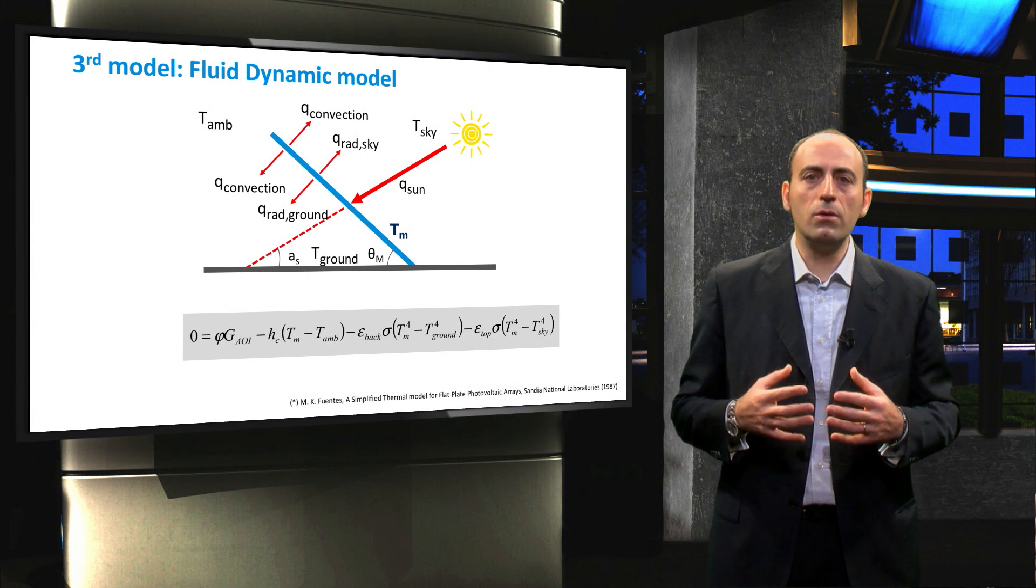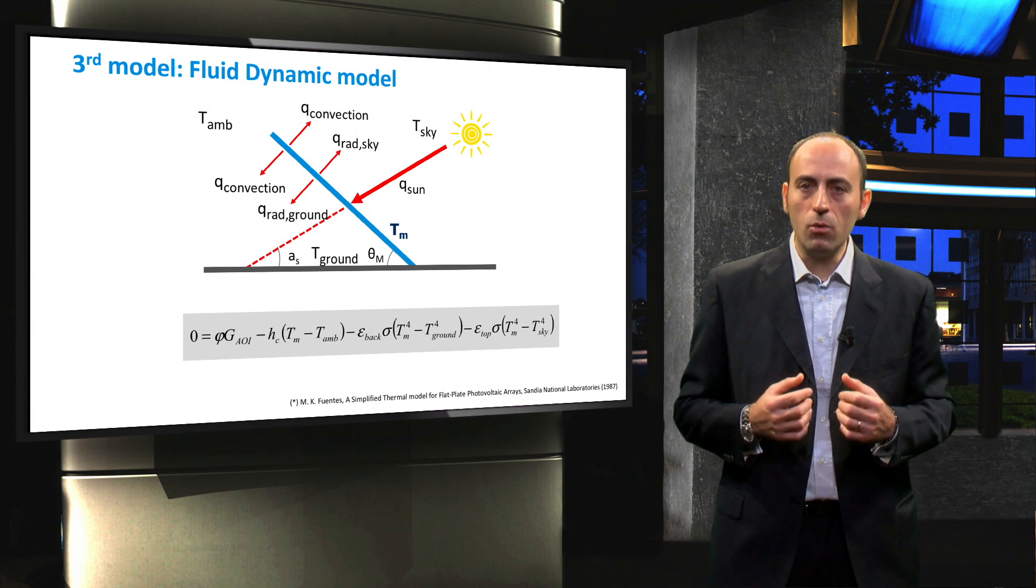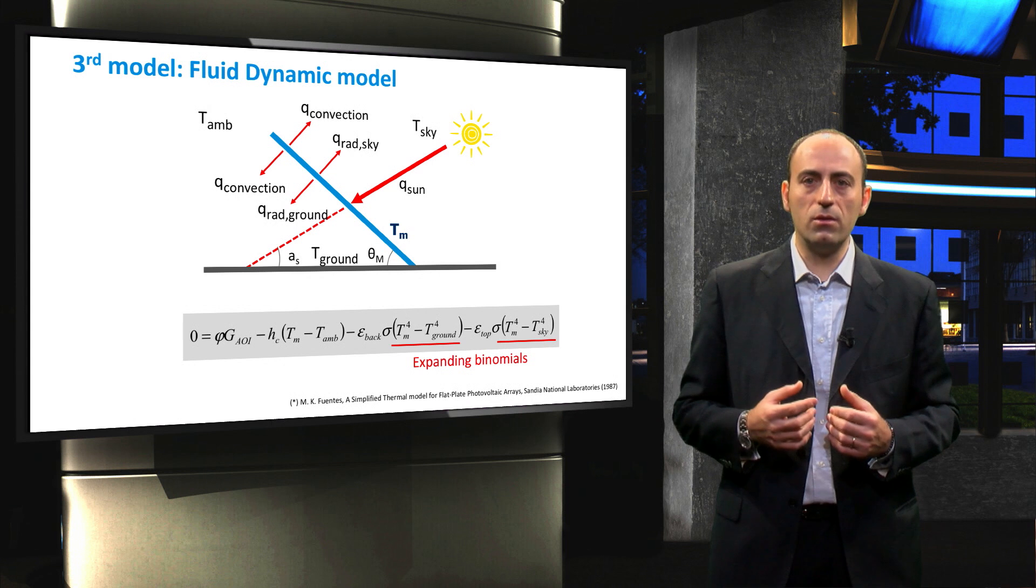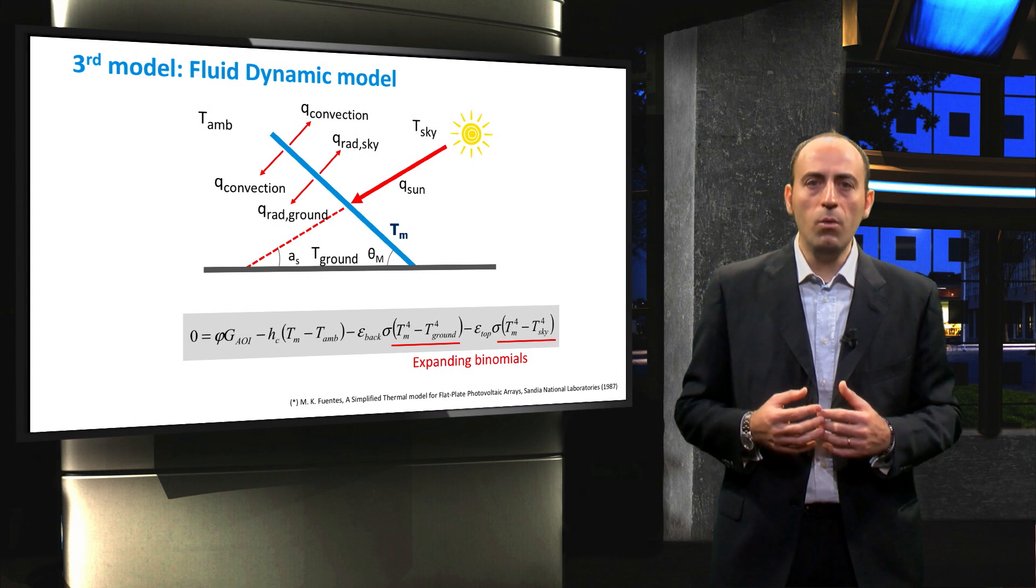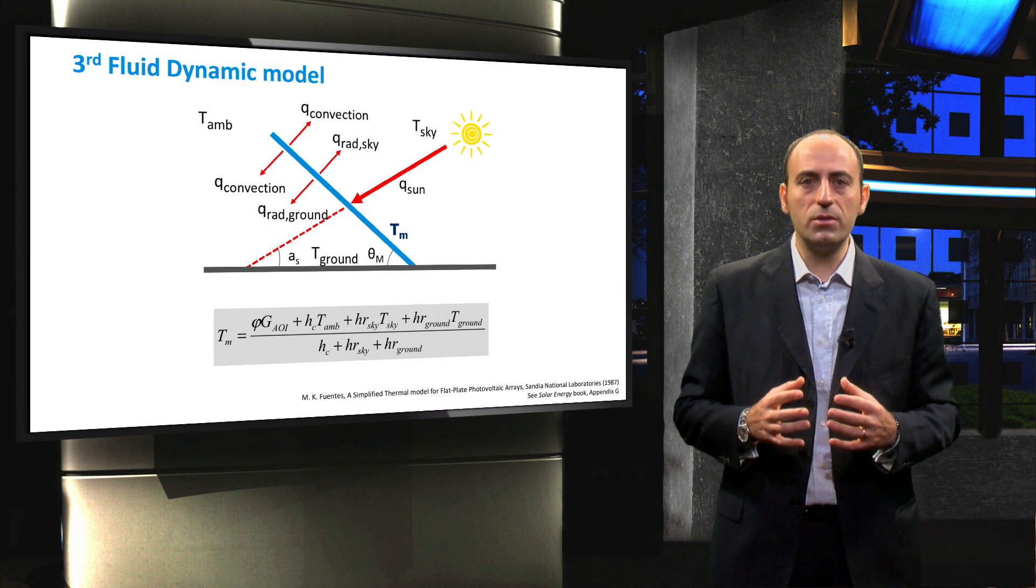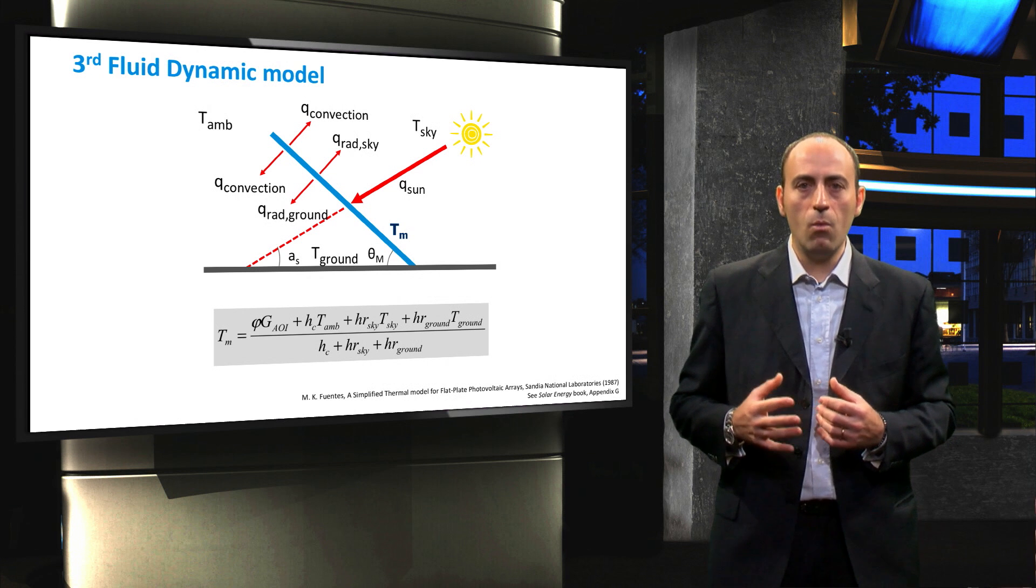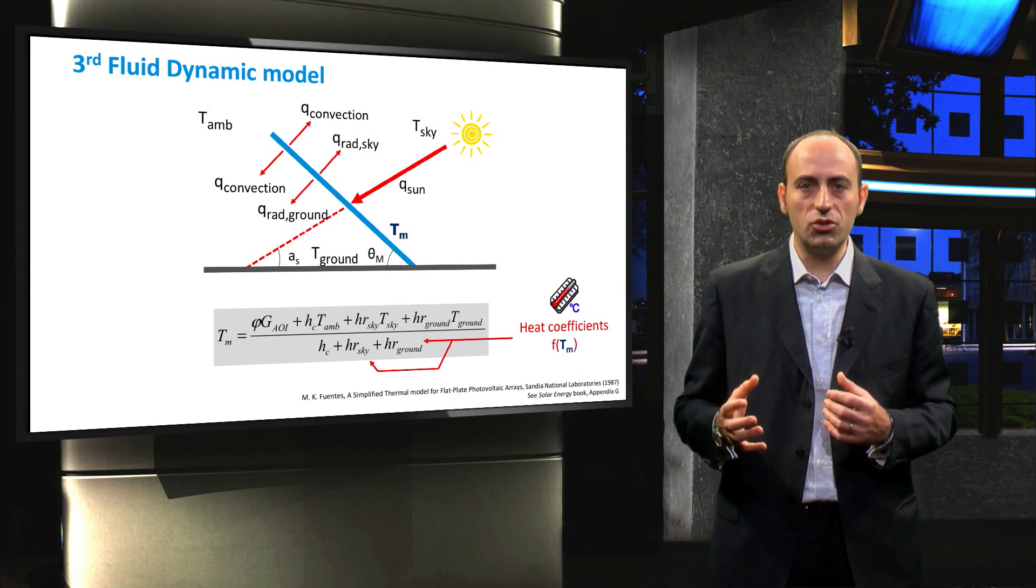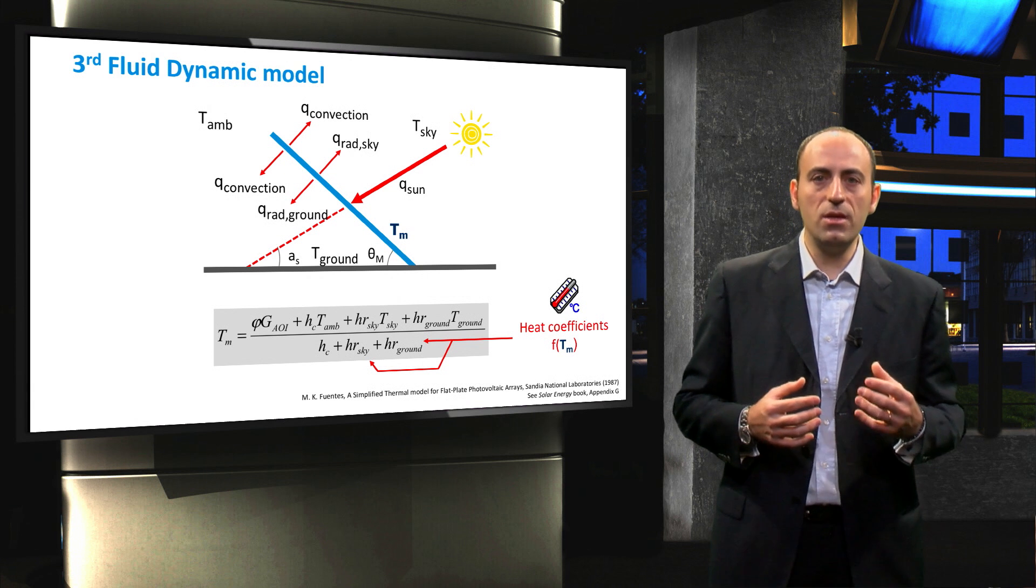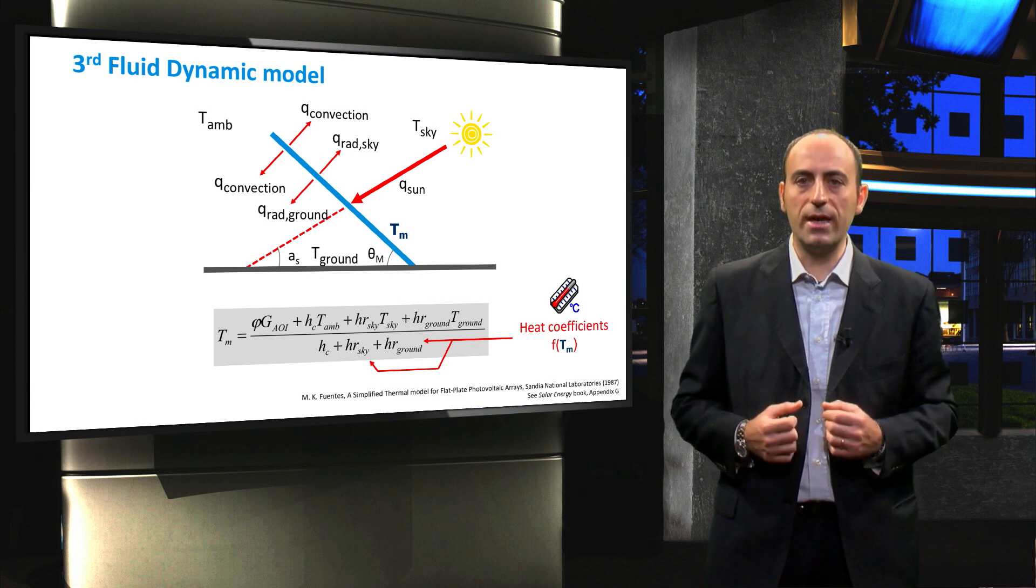So, now that we do not have to deal any more with the differential equation, we can expand the two binomials to the fourth power in linear binomials, which are much easier to use. By rearranging the terms, the equation can be explicitly expressed by this formula, where the radiative heat exchanges are functions of the module temperature, and hence the equation must be solved iteratively with an initial guess.